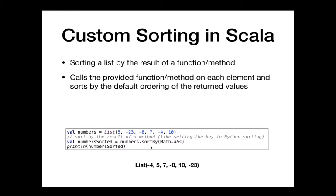What if we don't want that ordering? What if we don't want to sort by less-than? We can use `sortBy` and give it a method or a function as an argument. We're going to sort the elements using the default sorting order of the return value of that function. Instead of just sorting numbers using the less-than comparator, we apply `math.abs` to every element and then sort using the default comparator for ints, after calling `math.abs`.